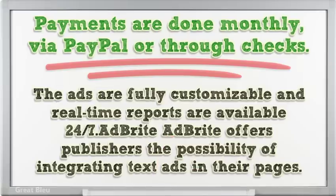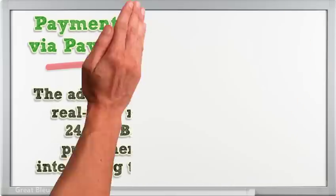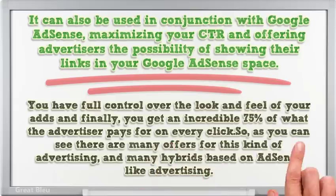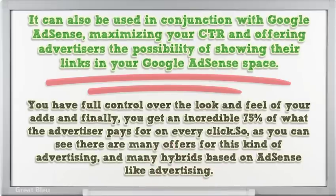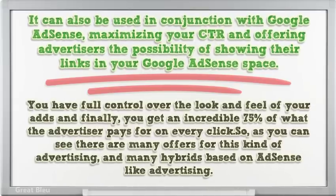The ads are fully customizable and real-time reports are available 24/7. AdBright offers publishers the possibility of integrating text ads in their pages. It can also be used in conjunction with Google AdSense, maximizing your CTR and offering advertisers the possibility of showing their links in your Google AdSense space. You have full control over the look and feel of your ads, and you get an incredible 75% of what the advertiser pays for on every click.